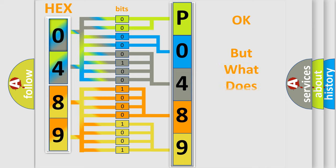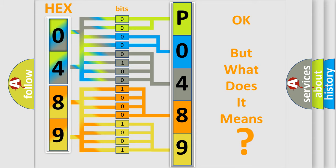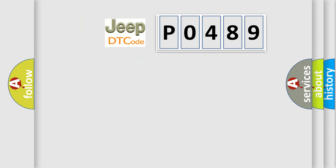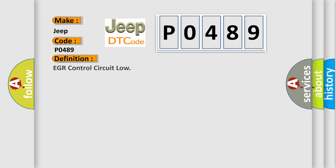The number itself does not make sense to us if we cannot assign information about what it actually expresses. So, what does the diagnostic trouble code P0489 interpret specifically for Jeep car manufacturers? The basic definition is: EGR control circuit low.